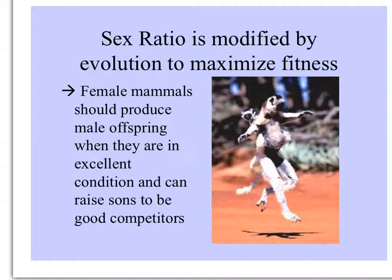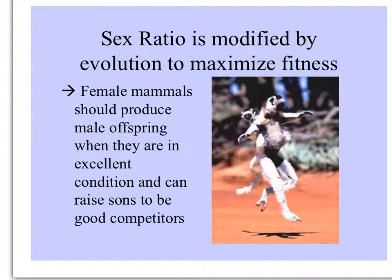Sex ratio in populations is modified by evolution to maximize the fitness of a species under prevailing conditions. Sex ratio theory predicts that female mammals should produce male offspring when things are good, but their litters should be female-dominated when conditions are harsher.